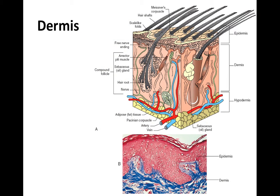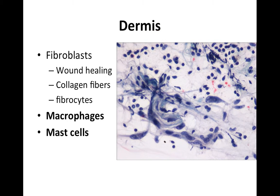Now looking at the dermis: we have fibroblasts, which are responsible for wound healing. They have collagen fibers and basically act as a little band-aid, working their way to an infection and sealing it off with structure. Fibroblasts are a spindle cell — they have a nucleus in the middle with wisps on either side. It's not uncommon to see fibroblasts if you take a deep epithelial tissue sample.